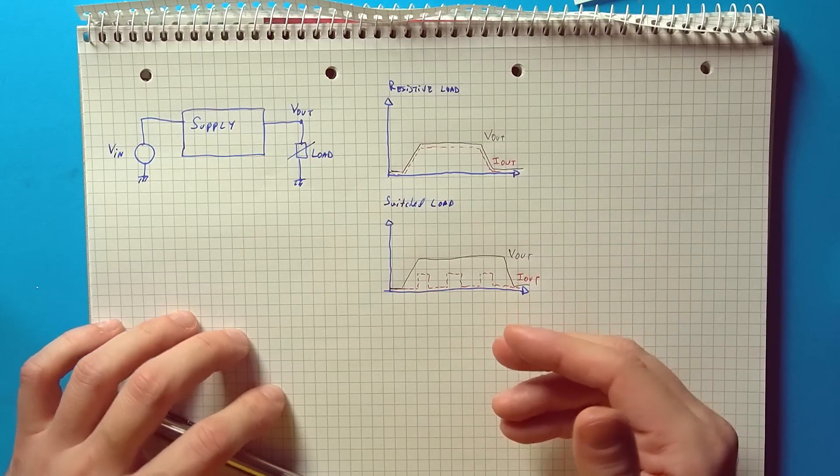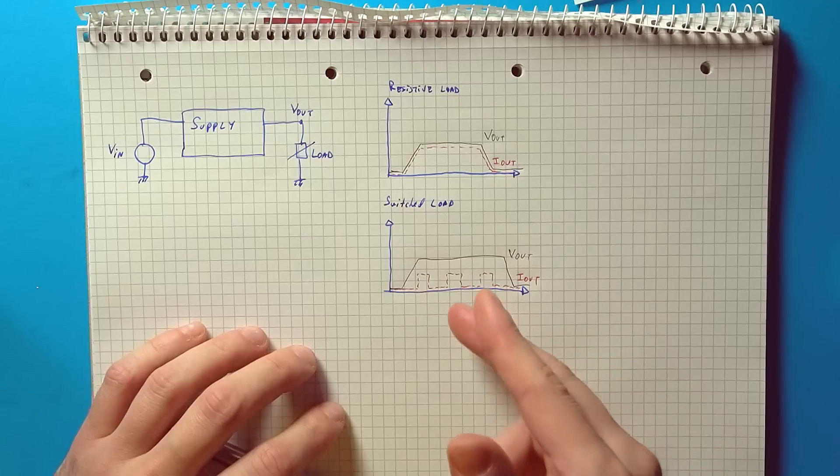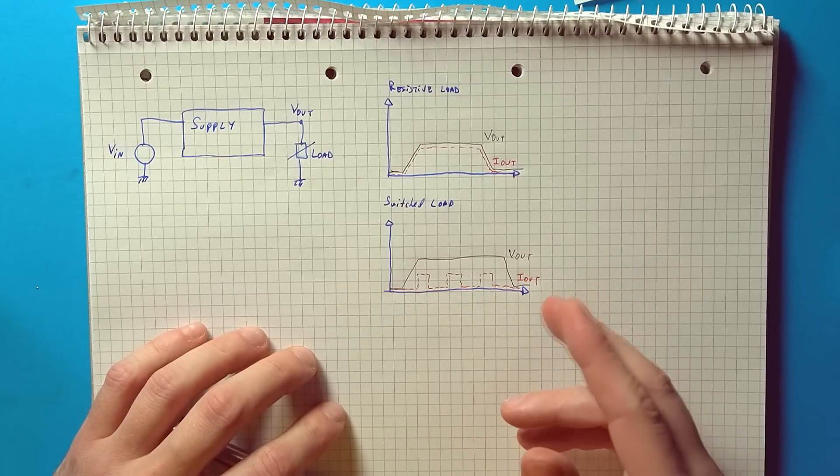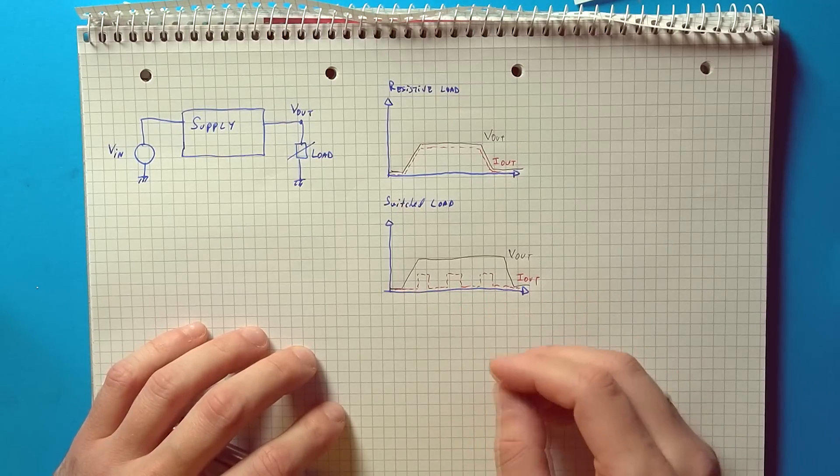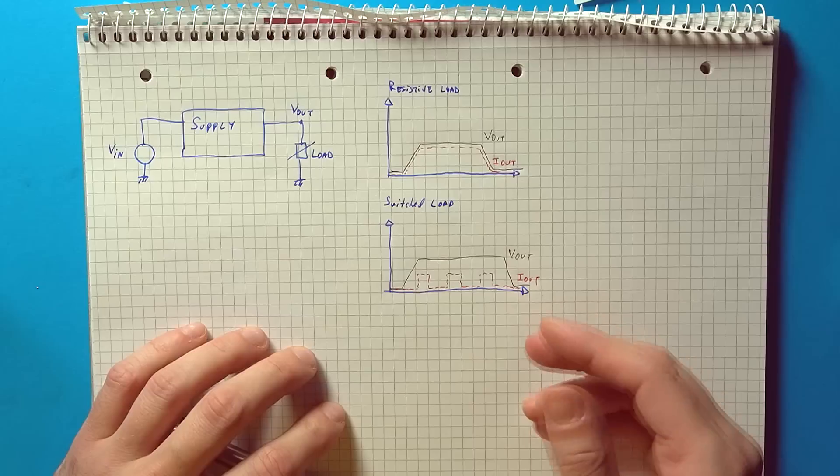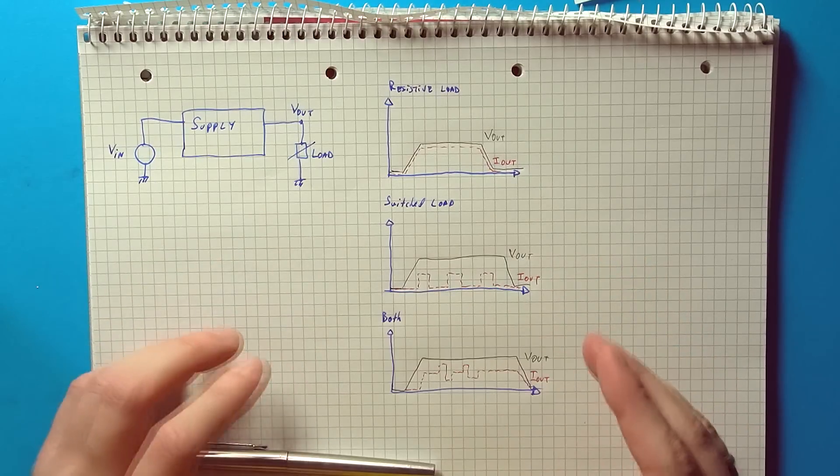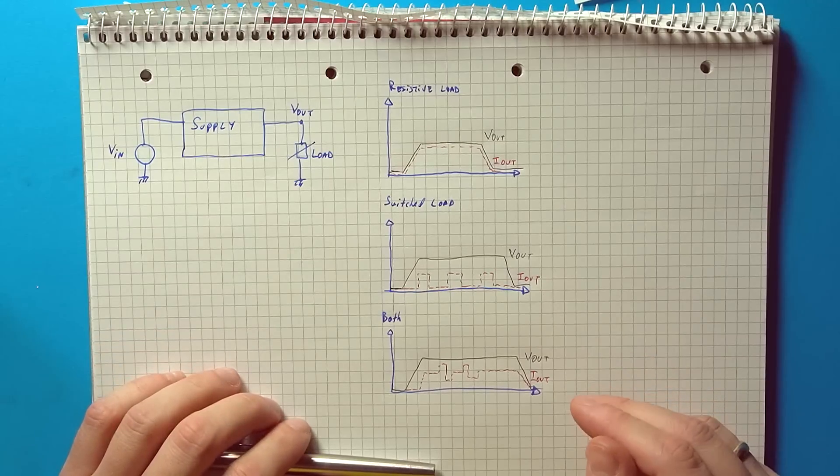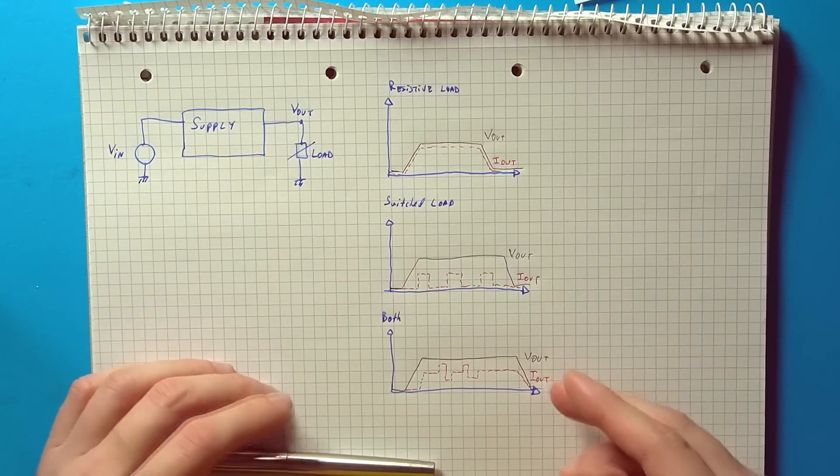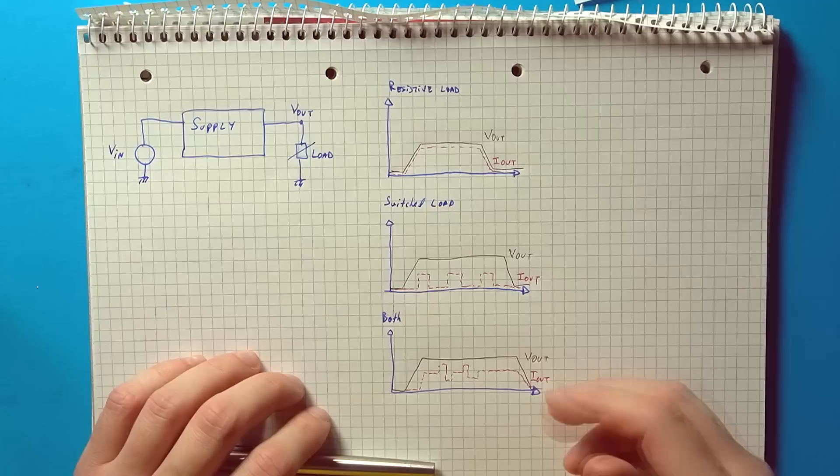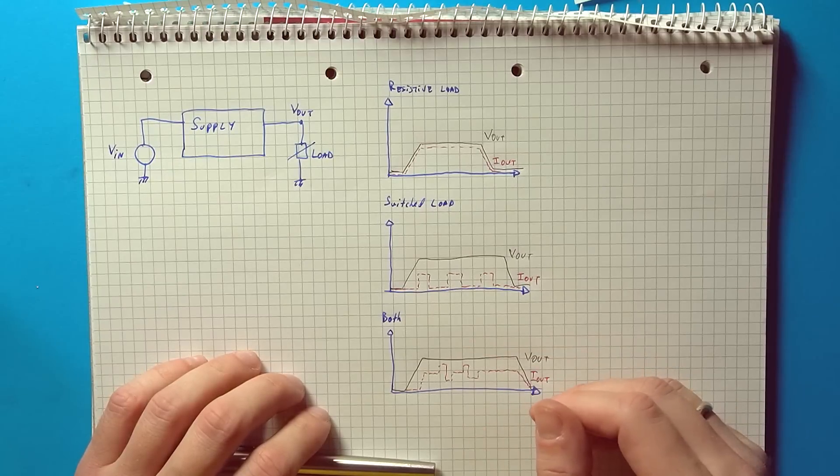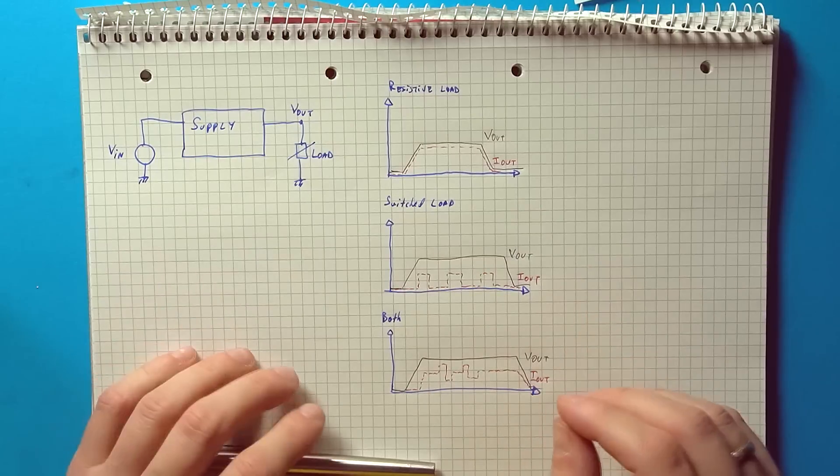So after the supply is activated there is a time delay until the load is connected or the load is periodically connected. So for example an LED with a specific duty cycle applied will fit the bill here. And then there's the combination of both of these. So both a constant amount of load coupled with a switched load superimposed on the first one. This will commonly occur in more complex circuits.